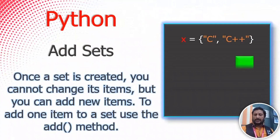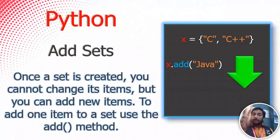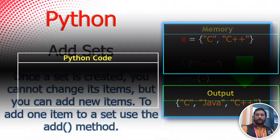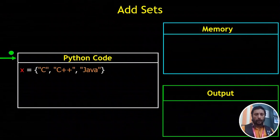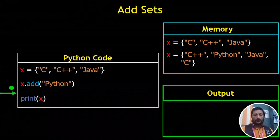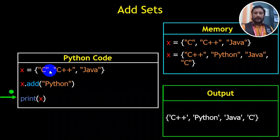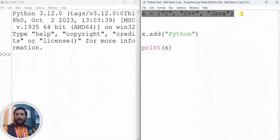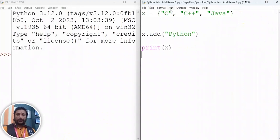Now, sets are immutable in their elements but we can add items using the add() method. We have a set X containing Moon, C, and Java. We can add Python using x.add('Python'). Now we can print the data and we will see Python has been added to the set.